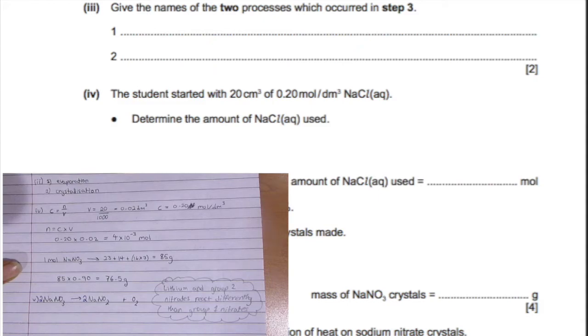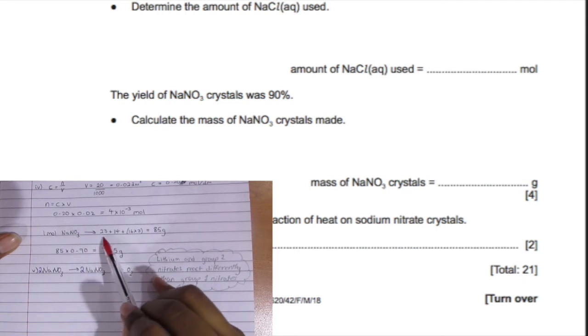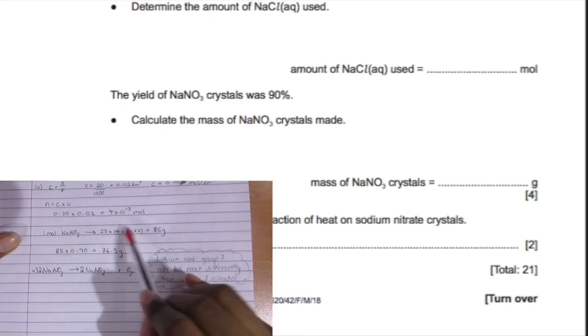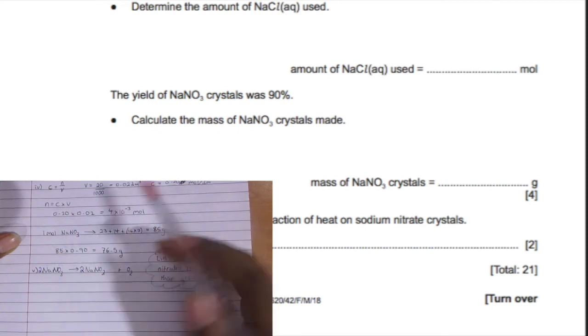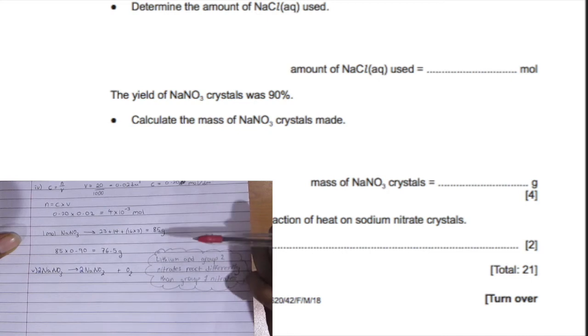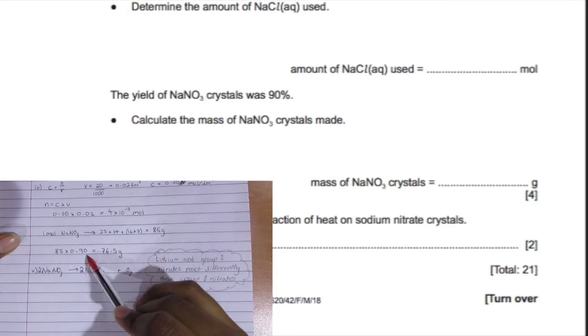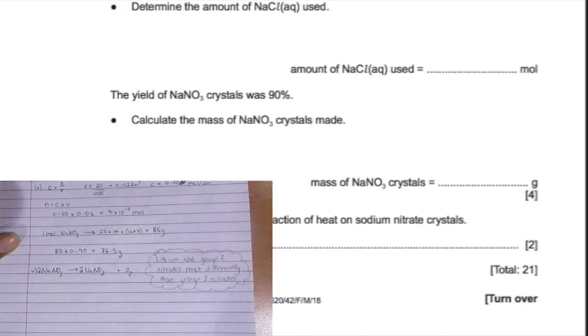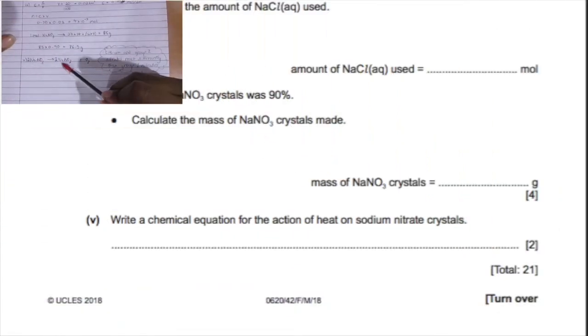We're supposed to find the mass of the sodium nitrate crystals when the yield was 90 percent. One mole gives us 85 grams. Sodium has atomic mass 23 plus nitrogen 14 plus oxygen 16 times 3 gives you 85 grams. Now we need 90 percent of 85 grams, so change 90 to decimals by dividing by 100. So 85 times 0.90 is 76.5 grams.